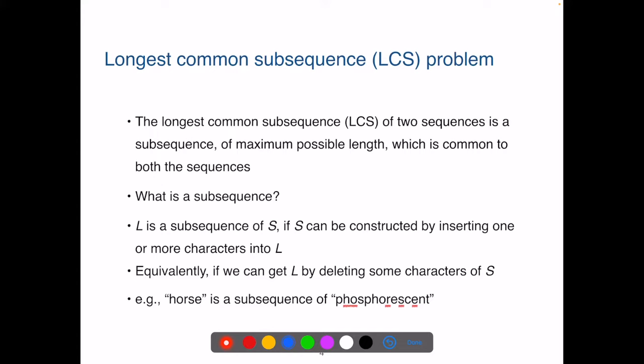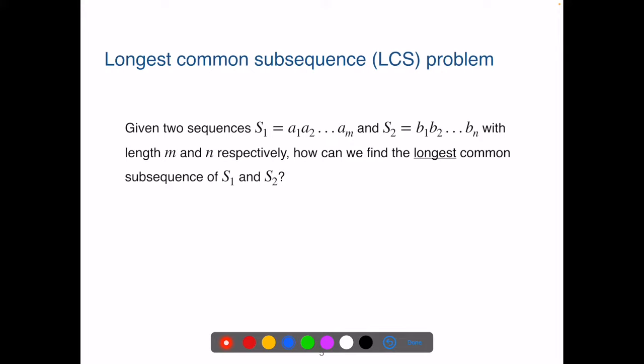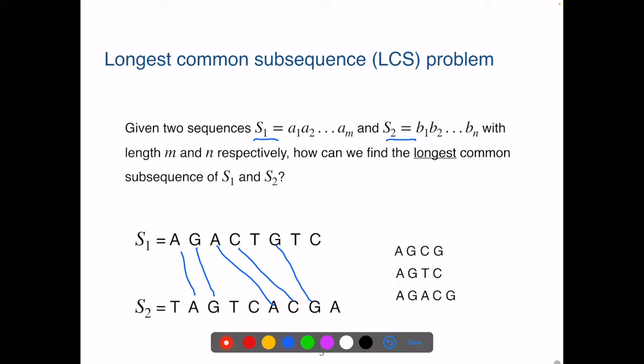For instance, horse is a subsequence of phosphorescent. Now, given two sequences S1 and S2, how can we find the longest common subsequence shared by S1 and S2? For instance, S1 and S2 here have common subsequences. There is AGCG, there's also AGTC, and AGACG, where AGACG is the longest.